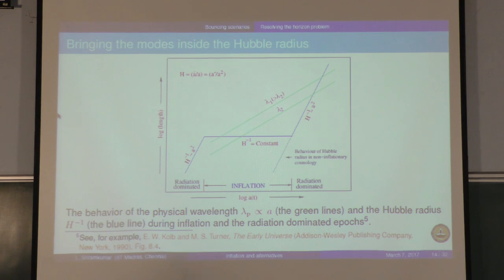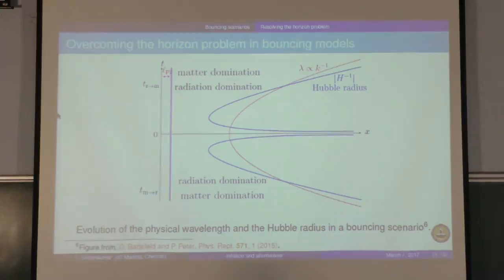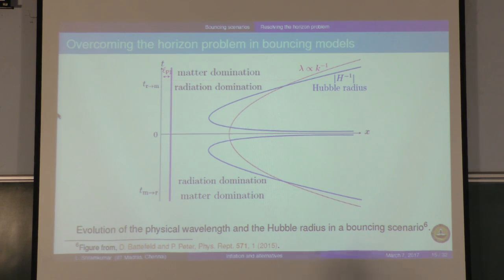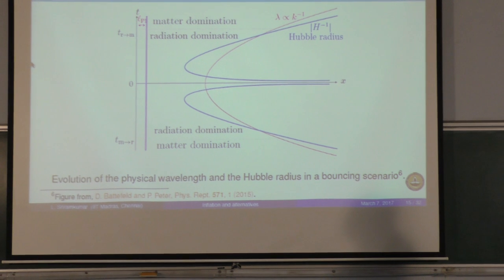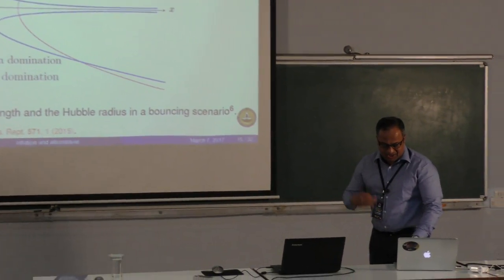This is essentially what happens in the case of a bouncing model as well. What has been done in the next figure is that this figure has been rotated by 90 degrees. The vertical axis is the time coordinate and the horizontal axis is length. The two scales plotted are the wavelength of the perturbation, which is in red, and the Hubble radius, which is in blue. Since the scale factor has a minimum at the bounce, the Hubble scale blows up at the bounce, and at very early times the wavelength of the perturbation is much smaller than the Hubble radius. If you have a matter-dominated epoch at very early times, you can have modes well inside the Hubble radius and impose Bunch-Davis initial conditions.